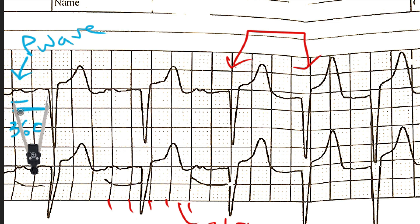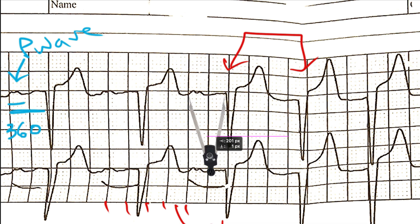At this point I set the calipers for this PR interval and we're going to look at the next beat. That PR interval looks to be the same, still around 360 milliseconds. And then when we look at the third beat, again we have a nice P wave with a stable PR interval. So you can say that's normal sinus rhythm at 68 beats per minute with first degree AV block.